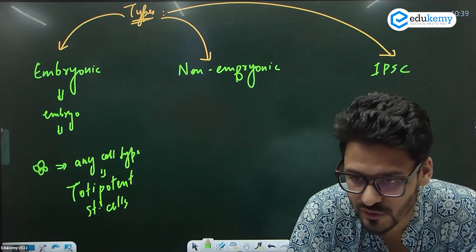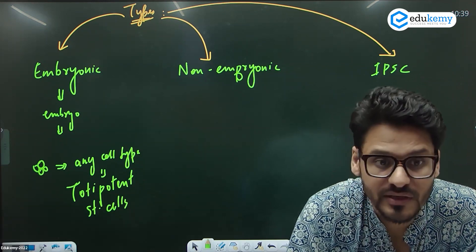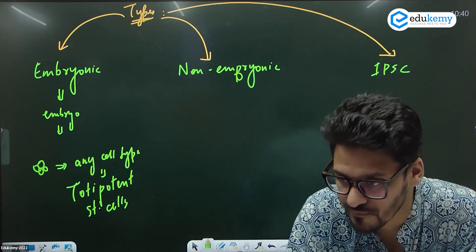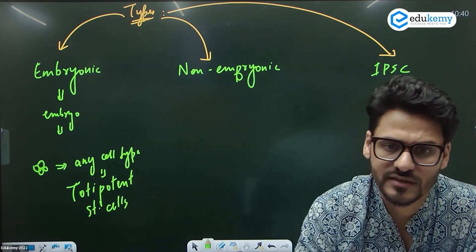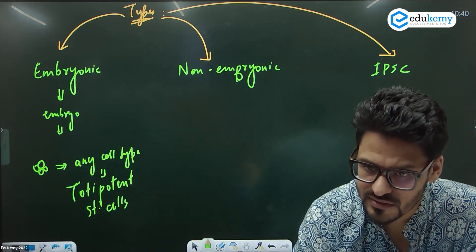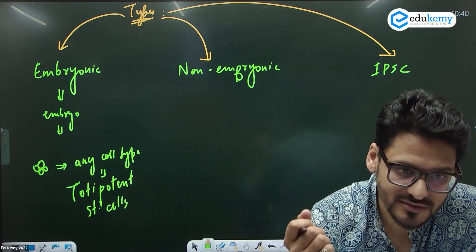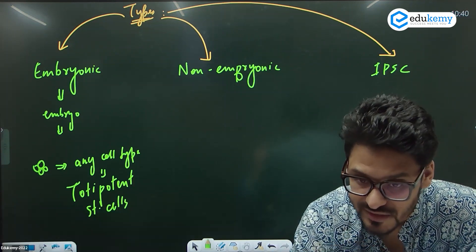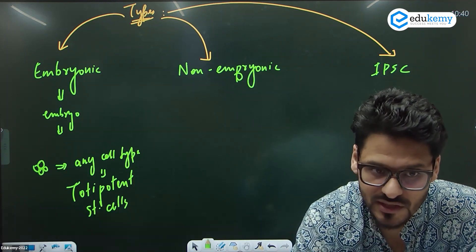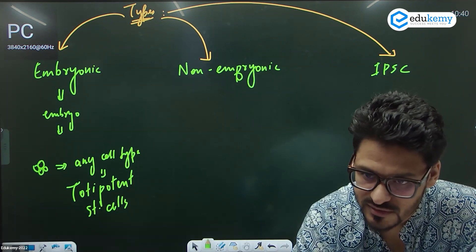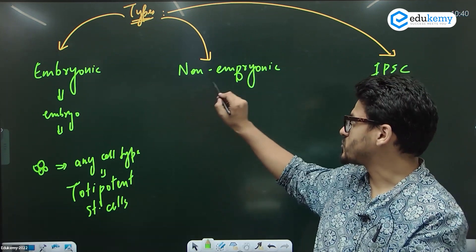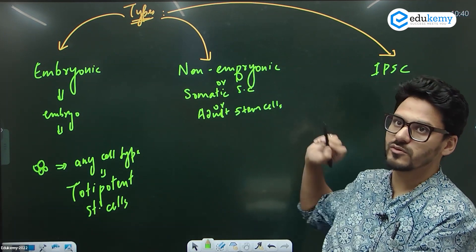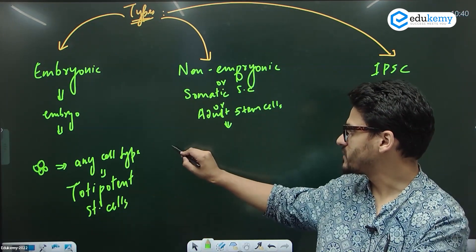The second type is non-embryonic — we are no longer talking about the embryo. Now the child has been born and has become a non-embryonic form, either a baby or an adult. Your body also has stem cells right now, but they are non-embryonic. Non-embryonic stem cells are also known as somatic stem cells or adult stem cells.